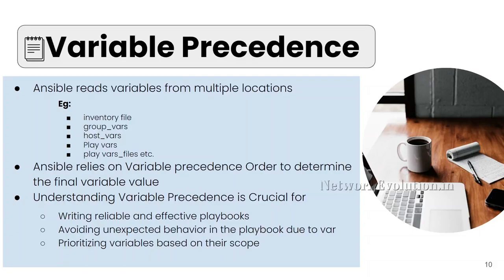In this tutorial, we will see some examples of variable precedence. This slide we have seen earlier when we looked into the playbook vars. Ansible reads variables from multiple locations. We have already seen how to read variables from inventory file, group vars, and host vars, how to add it in the playbook, how to add it in play vars, and how to use include_vars and set_fact modules. If you are using the same variable in multiple locations, Ansible relies on variable precedence order to determine the final variable value. Understanding variable precedence is essential for writing reliable and effective playbooks and to avoid unexpected behavior due to variable changes. This will even help you in prioritizing variables based on their scope.